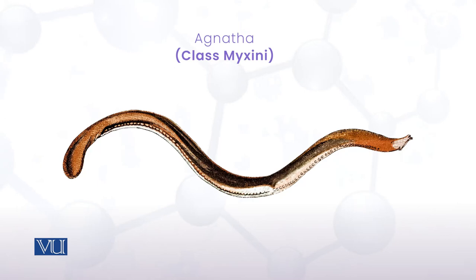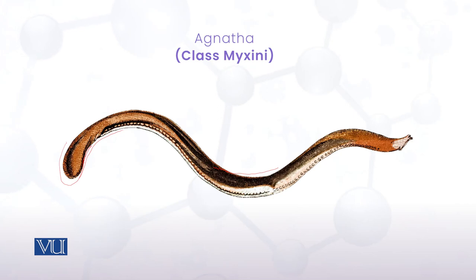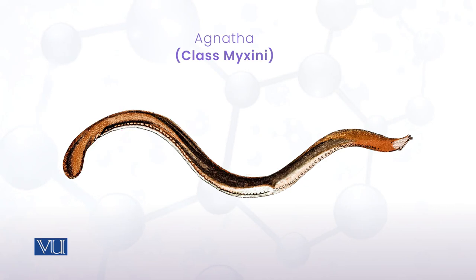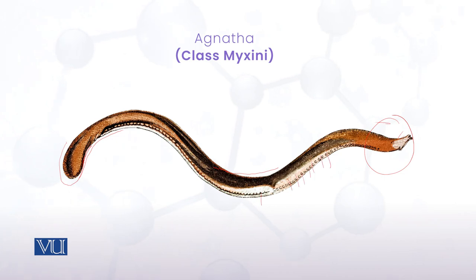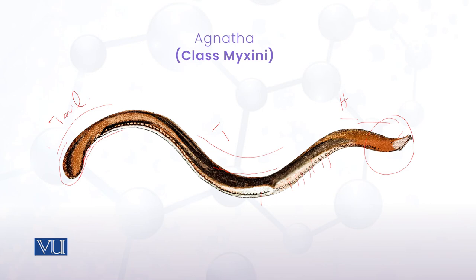Diagram میں caudal fins، ventral fins اور dorsal fins ہیں، but they are not distinct - ایک دوسرے سے continuous form میں ہیں، اس لیے یہ properly نظر نہیں آتیں اور body بالکل worm-like نظر آتی ہے۔ Mouth part میں tentacles ہوتے ہیں، اور pore-like structures جو نظر آ رہے ہیں وہ pharyngeal slits ہیں۔ Body میں head, trunk اور tail region ہے، body بالکل slimy ہے، کوئی scales نہیں، اور یہ hermaphrodite in nature ہیں۔